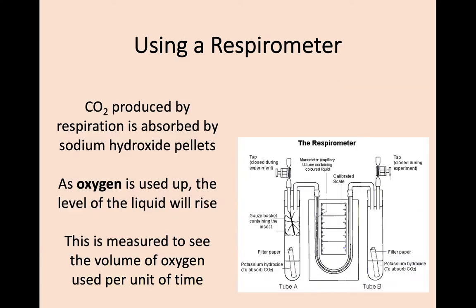A respirometer is a fairly basic device. You have an organism in a sealed tube with a tap that's closed to make sure no other air gets in. There will be air in the tubes, but next to the measuring point there will be a liquid. As the organism takes in oxygen, the gas moves and the liquid rises, allowing us to see how much oxygen has been consumed over a period of time.